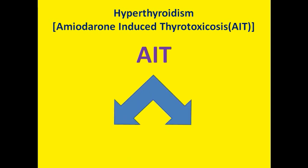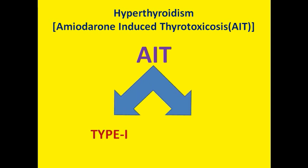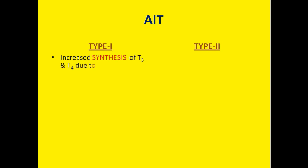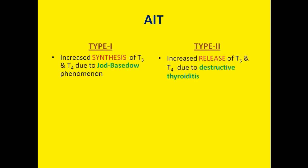Amiodarone-induced thyrotoxicosis (AIT) is classified into Type 1 and Type 2. In Type 1, there is increased synthesis of T3 and T4 due to the Jod-Basedow phenomenon, whereas in Type 2, there is increased release of T3 and T4 due to destructive thyroiditis.